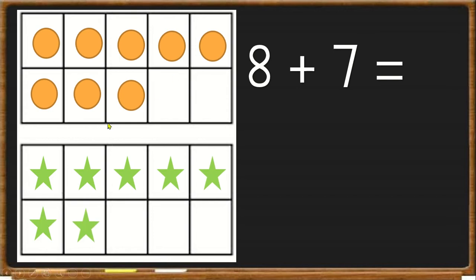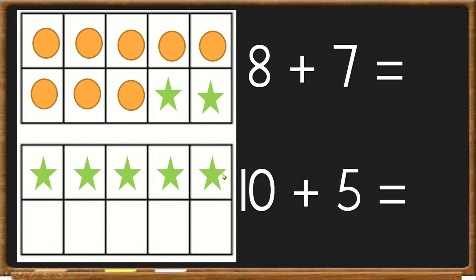Now we want to fill up our 10 block. So we're going to take 2 counters from the 7, and put them over here, because we have 2 spaces left. So I put my first counter, and my second counter. Now I have 10 plus 1, 2, 3, 4, 5. So my new equation will be 10 plus 5. And now this is easier to solve. So I have 10, 11, 12, 13, 14, 15. So 10 plus 5 is 15.